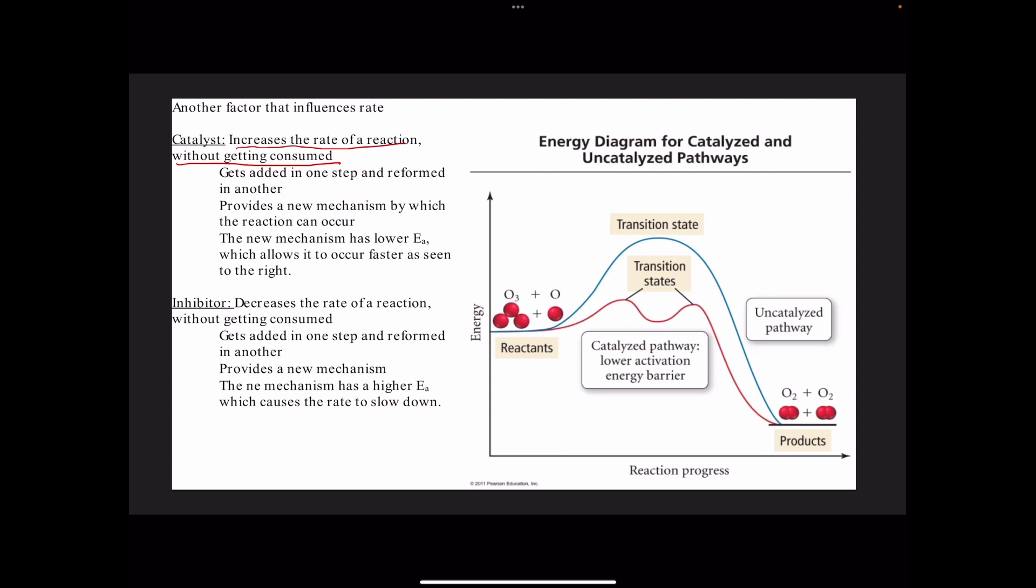An inhibitor does the opposite. It decreases the rate of a reaction without getting consumed. It appears exactly the same in a mechanism. It gets added in one step and reformed in another. The difference is that it raises the activation energy. The inhibitor, just like the catalyst, provides a new mechanism. The new mechanism has higher activation energy, causing the rate to slow down.